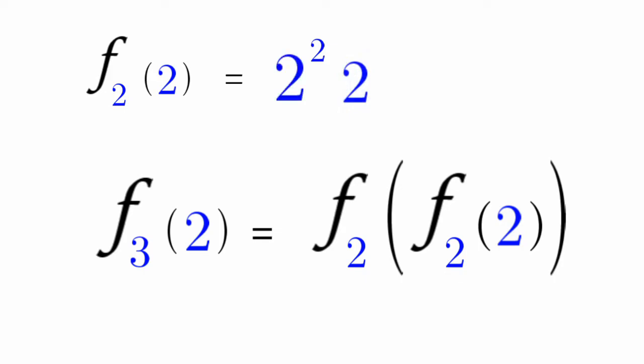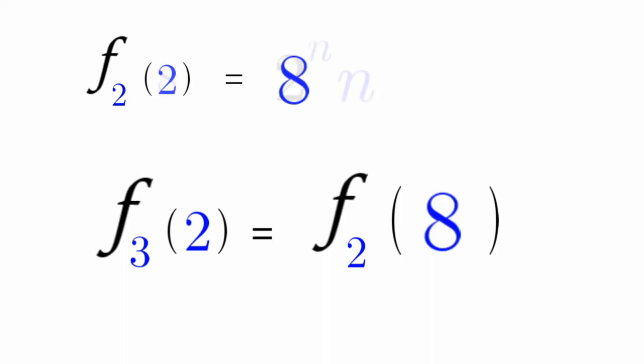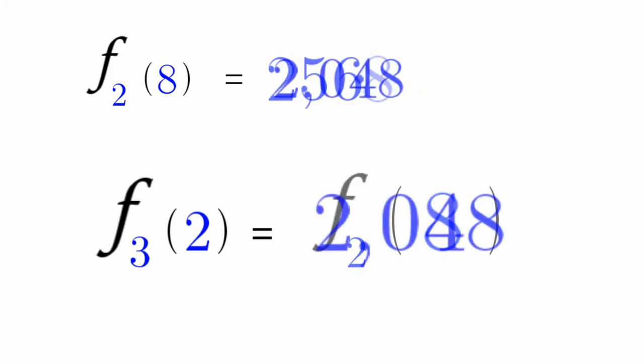f sub 2 of 2, that's equal to 4. f sub 2 of 4 is 2 to the power of 4 times 4. That's equal to 2 to the 16, times 8, which is 2048.